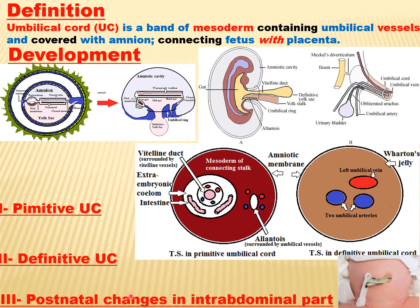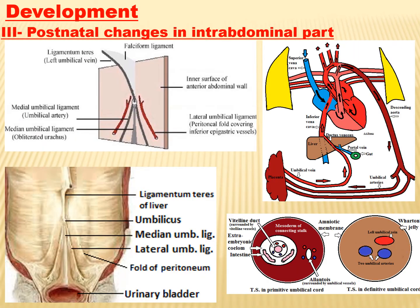The definitive umbilical cord is formed only of three vessels embedded in Wharton's jelly and covered by the amniotic membrane. Then we come to the postnatal changes in the intra-abdominal part. Immediately after birth, the cord is ligated, leaving a stump about two to three finger-breadths in length. The umbilical stump drops within one to two weeks, and the intra-abdominal vessels and structures undergo changes.